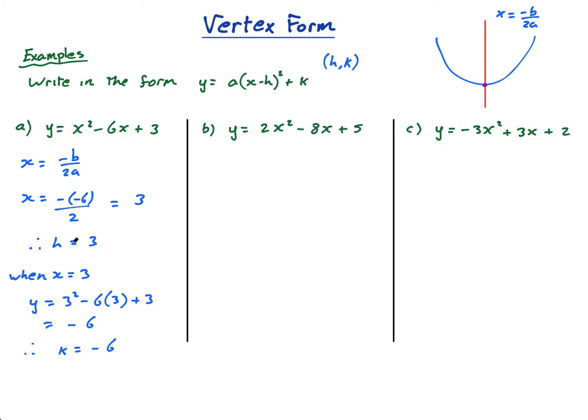And now I just have to write it in this form, and a, I have a. A is what comes before the x squared, so a in this case is 1, a in this case is 2, a in this case is negative 3. So I can now write y equals a is 1, so 1, but I'm not going to put it, x minus 3, x minus h squared, plus k. K is negative 6, so it's plus negative 6, or minus 6, and that's it, done.